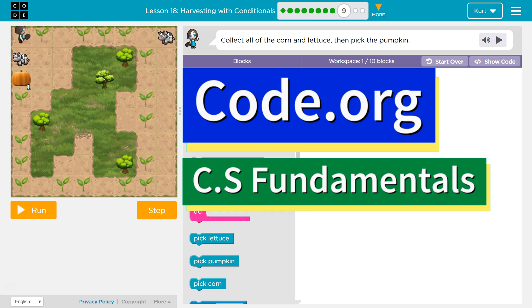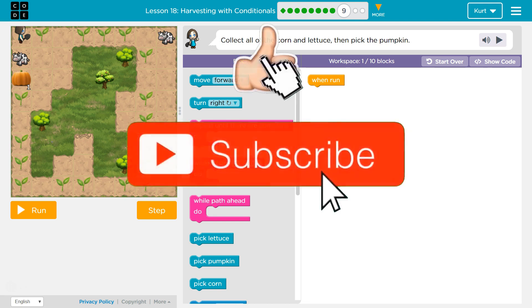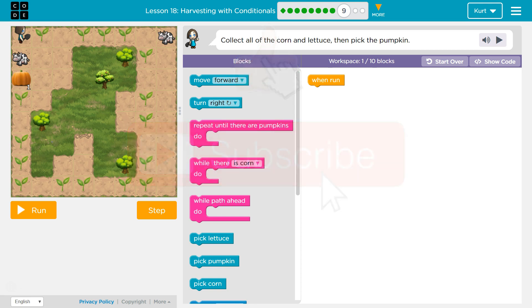This is code.org. I'm currently working on CS fundamentals. Collect all the corn and lettuce then pick the pumpkin. Wow, this sounds familiar. All right, so they want us to do this within ten blocks.